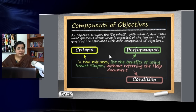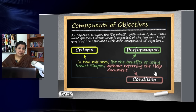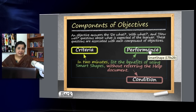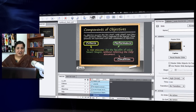But what if the learner doesn't understand what criteria or performance exactly means? Putting all that explanation on the same screen would make it really cluttered. Instead, what if these are clickable options, and when the learner clicks one, they get a small pop-over window explaining the meaning? So here I need to add three lightboxes for these three components of objectives.